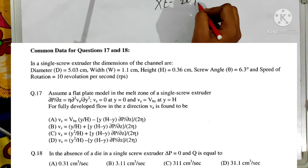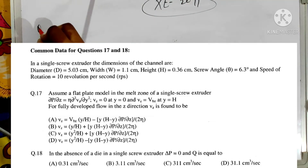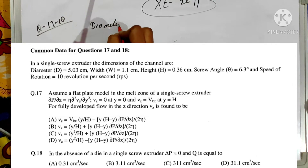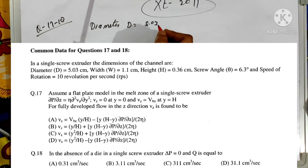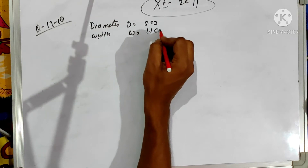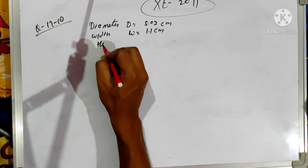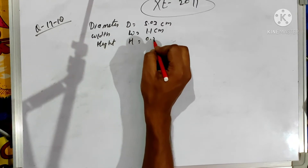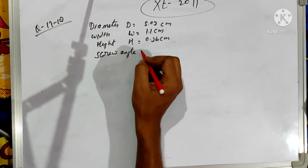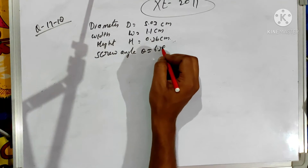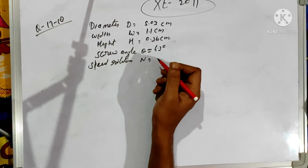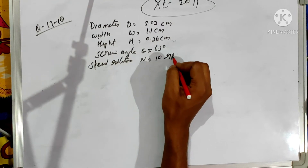In today's session, we are going to discuss the numerical part of 2011. The common data is given in question number 70 to 80. The diameter of the extruder is equal to 5.03. The barrel top extruder is given at 1.1 cm. The height of the screw flight is given at 0.36 cm. The screw angle theta is equal to 6.3 degrees and speed of rotation of screw n is equal to 10 rps, rotations per second.